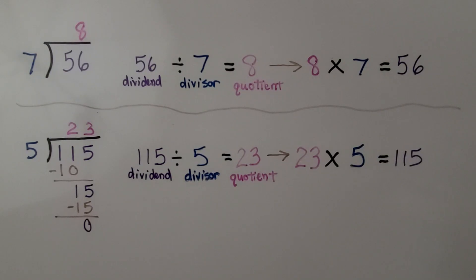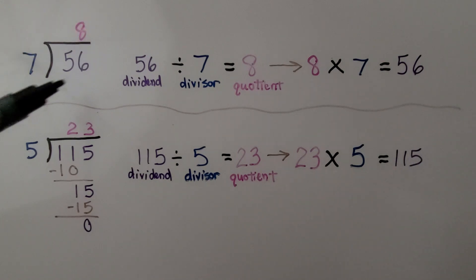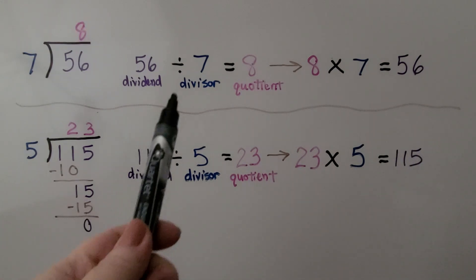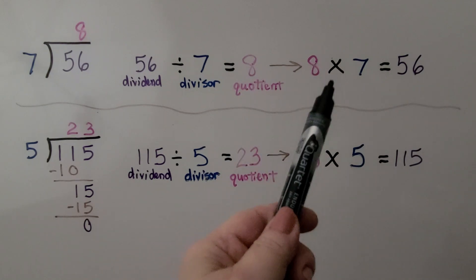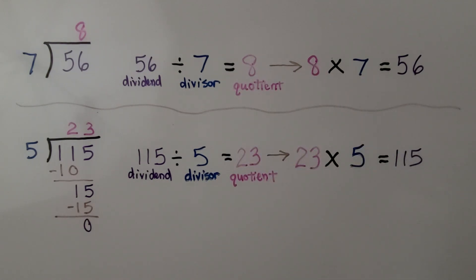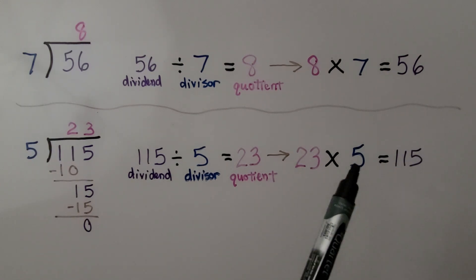It works with whole numbers as well as fractions. So if we had 56 divided by 7, it's going to equal 8 because 8 times 7 is 56. And if we have 115 divided by 5, it's equal to 23 because 23 times 5 is equal to 115.